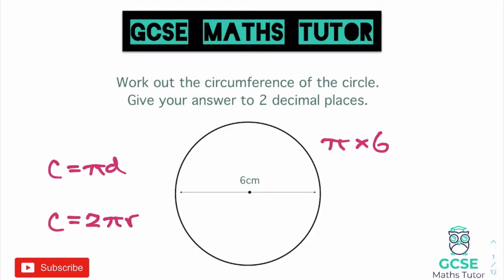If you're using a different calculator, have a look around for the pi button. The Casio is a very common one used in GCSE maths. Typing pi times 6 gives an answer of 6pi. If your calculator shows 6pi, click the S to D button — normally just above the delete button — to convert it into a decimal. The full answer on the calculator screen is 18.84955592.